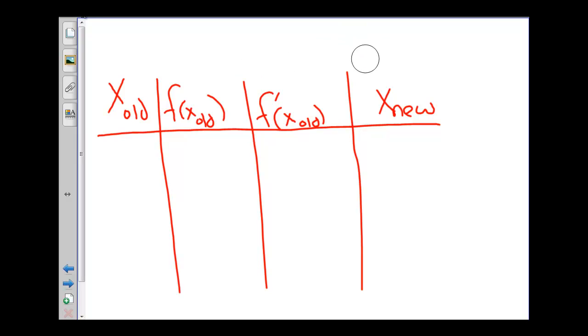And just for the sake of our memory, I'll put our formula up here. Remember that x new is equal to x old minus f of x old divided by f prime of x old.